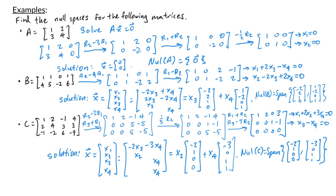If C were used in a matrix transformation, that transformation would not be one-to-one because the null space contains more than just the zero vector. Hopefully this gives you an idea of how to find the null space for a matrix. In the next video we'll look at the column space of a matrix.